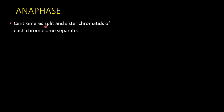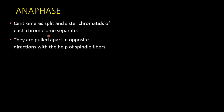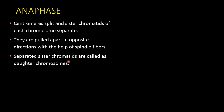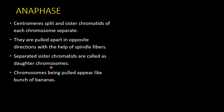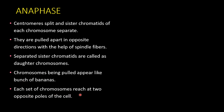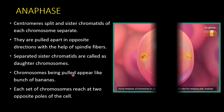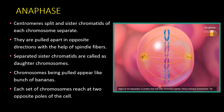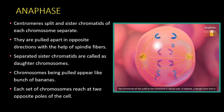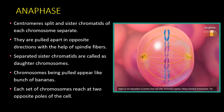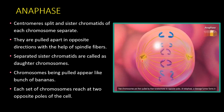In anaphase, the centromeres split and the sister chromatids separate, being pulled apart in opposite directions with the help of the spindle fibers. The separated chromatids are now called daughter chromosomes. These chromosomes are pulled toward opposite poles and look like a bunch of bananas. Each set of chromosomes reaches one of the two opposite poles of the cell.